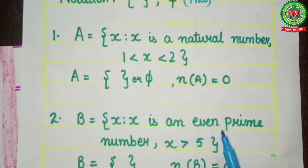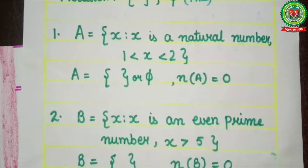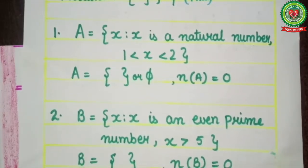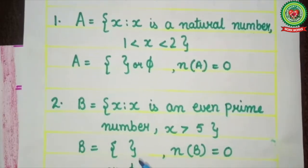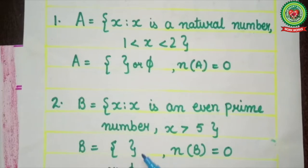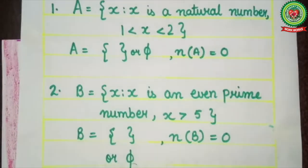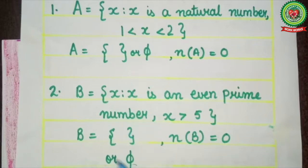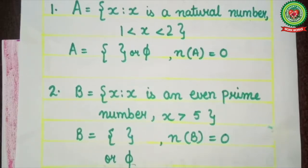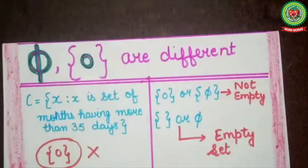Here, set B = {x | x is an even prime number where x > 5}. There is only one even prime number, that is 2, but 2 is less than 5. So no element will come in this set — it is again {} or φ, and its cardinal number is 0. Therefore it is a null set, void set, or empty set.